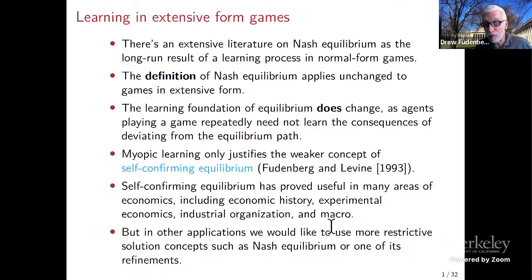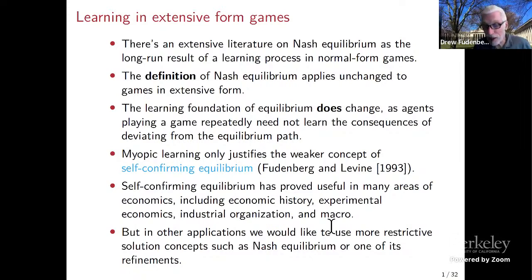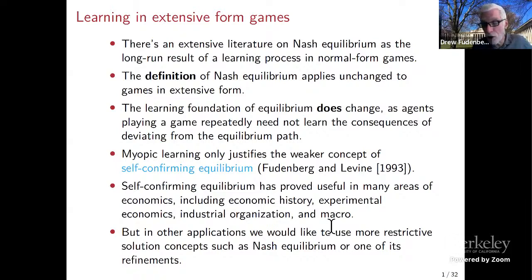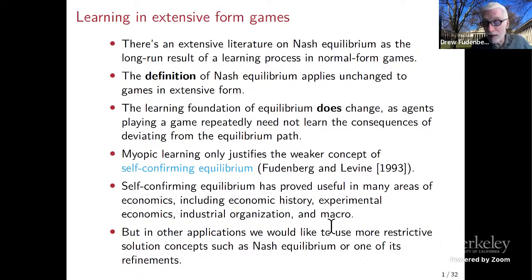Self-confirming equilibrium has been useful in many areas of economics, especially experimental economics, but also macro and related areas. But in other applications we'd like to use more restrictive concepts such as Nash equilibrium, or even one of the equilibrium refinements. So let's talk about when we'd expect learning to lead to Nash equilibrium or refinement in an extensive form game. Please feel free to interrupt any time — I only have 32 slides, so probably won't need the full 45 minutes.